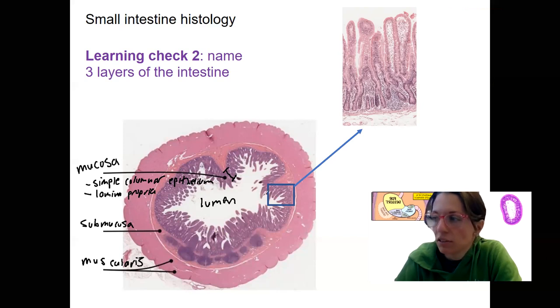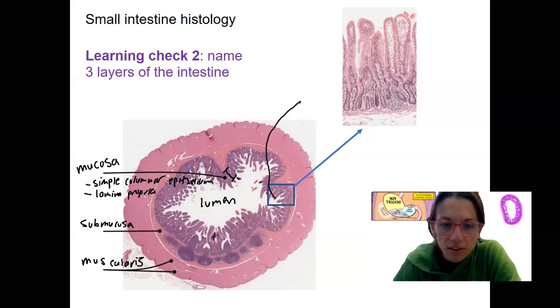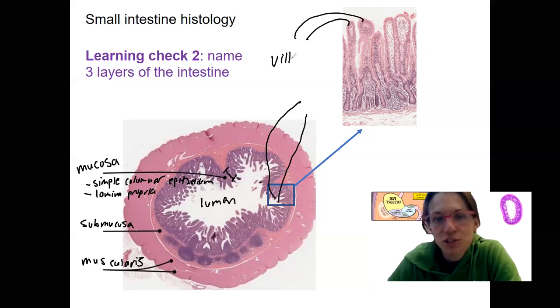What are these little finger-like things sticking out? This one is one, this one is one, and these are each villi. Each is villus, villi is plural. We'll come back to the importance of these. You cannot see microvilli in this view. They're there on the edges here, but these are villi.